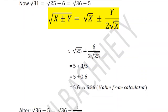First of all, square root of this number 25 plus... √25 is 5, and 6 by 2 is 3, and √25 is 5, so 3 by 5 is 0.6.